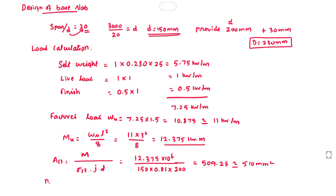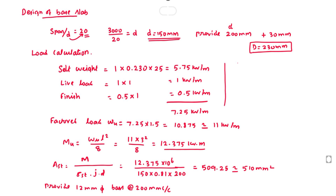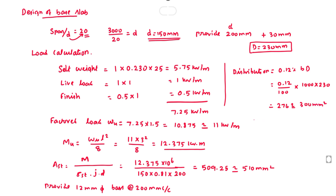Provide 12 mm diameter bars at 200 mm center to center. For distribution reinforcement, it is 0.12% of BD equals 0.12/100 x 1000 x 230 equals 276 mm², taken as 300 mm². Provide 10 mm diameter bars at 300 mm center to center. This completes the design of the base slab.